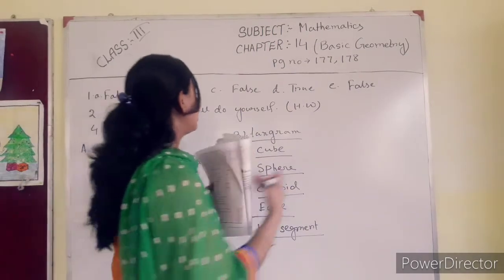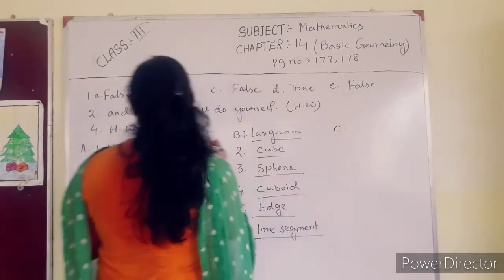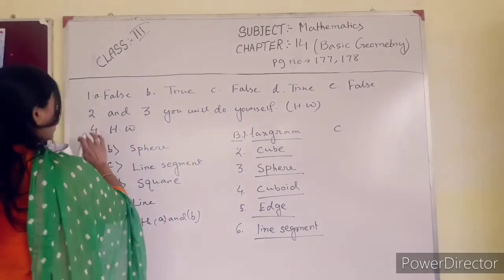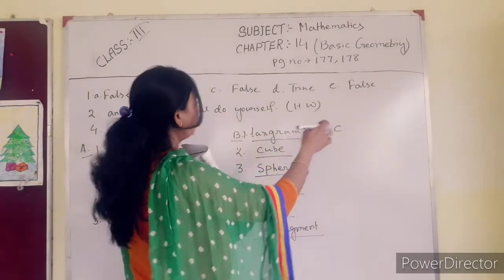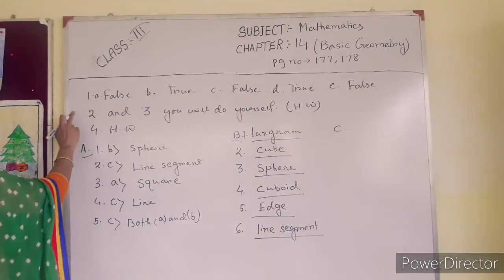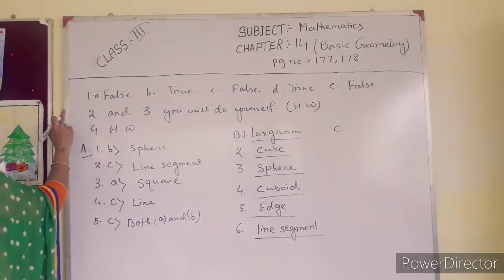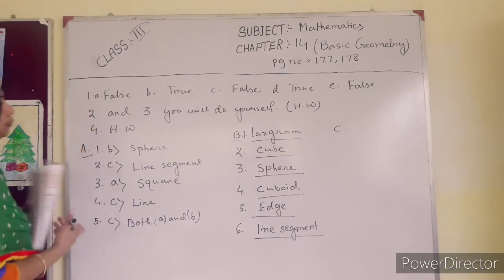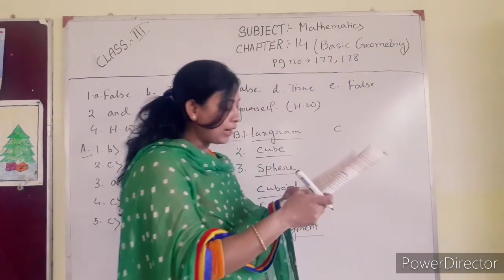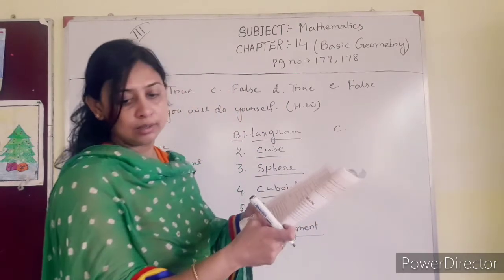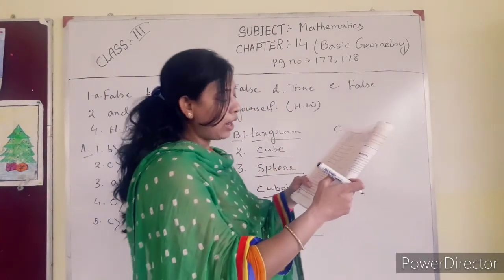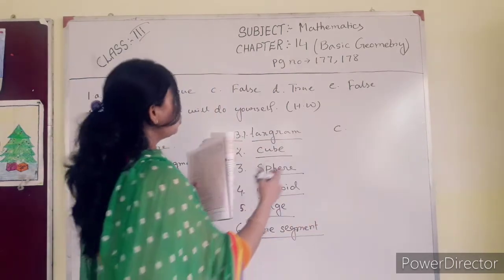Now true or false. You will do A, B and C in your book, and also question number 1 — but you will do question number 2 in your book. Number 6: a ray has one end point and extends in one direction — this one is true.